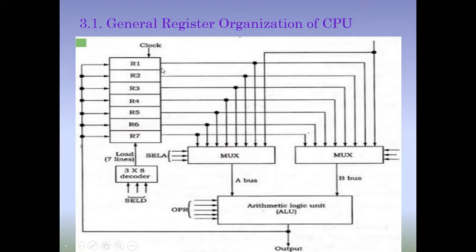Look at this figure — we have a set of registers, suppose seven or eight registers are there. We have a common bus for selecting content from these registers. This common bus is made up of multiplexers. We learned in unit number one about common bus architecture using multiplexers. So here we have a set of multiplexers, and all the registers are connected with this multiplexer.